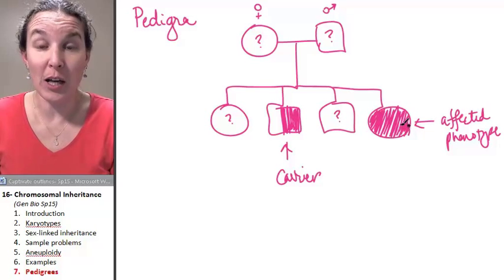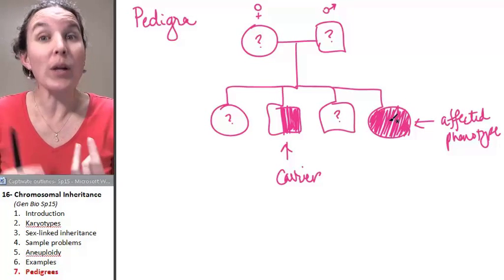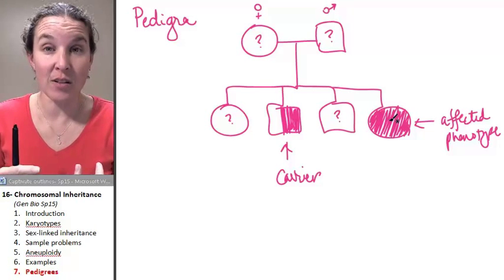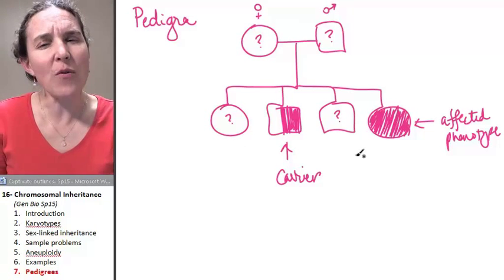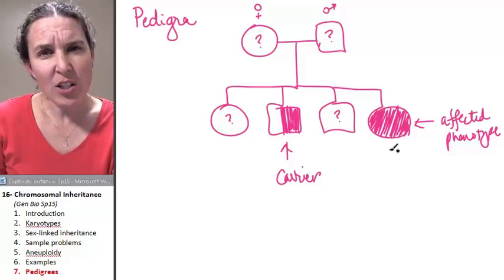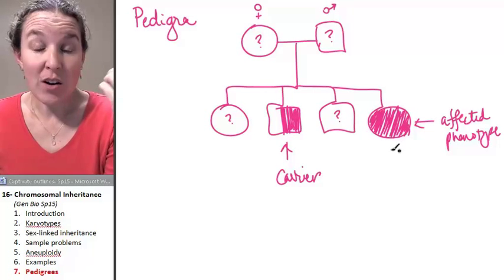This is a pedigree for colorblindness. If we're told that, we know colorblindness is a sex-linked recessive condition. But what if we weren't told anything about this condition? Because I don't know anything about it. We could actually look at this and see what we can figure out.